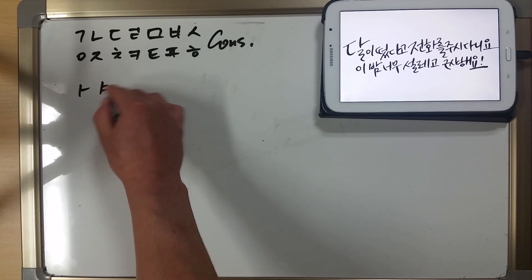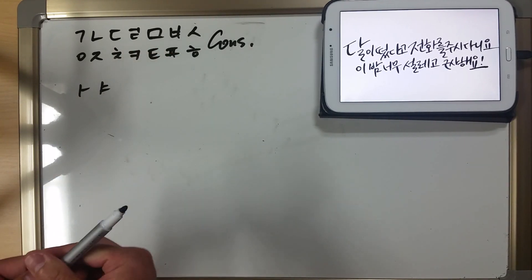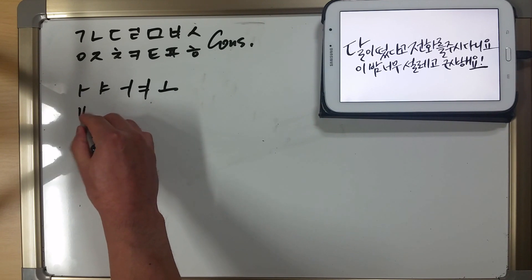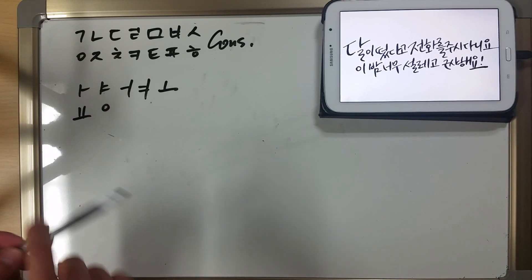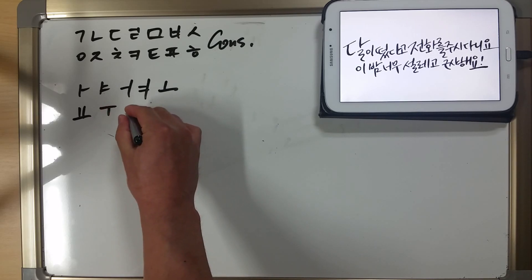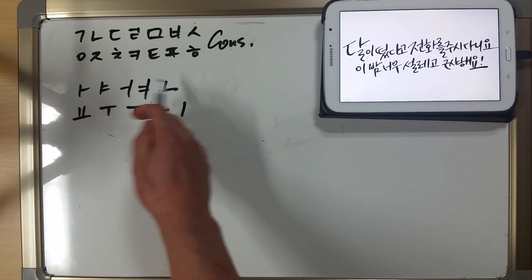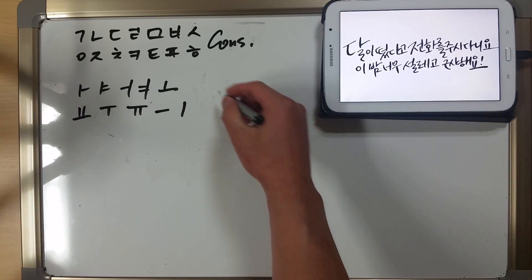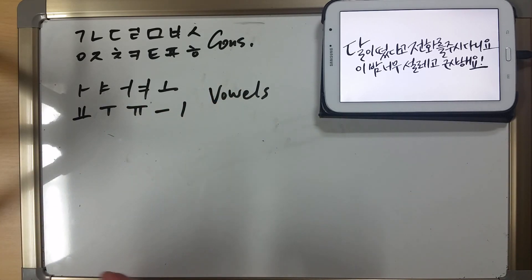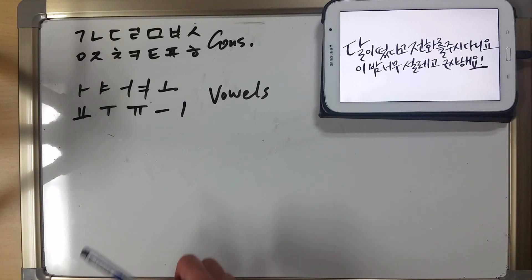A, ya, eo, yeo, o, yo, u, yu, eu, i. So I wrote the actual consonant and the vowel together. We have one, two, three, four, five, six, seven, eight, nine, ten — ten vowels. Now these can be combined in different ways, but I'm just going to keep it simple and go with these.